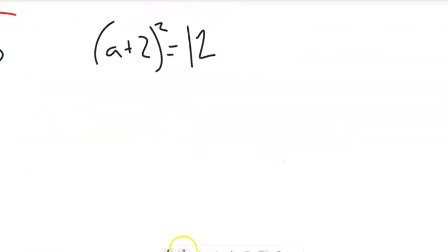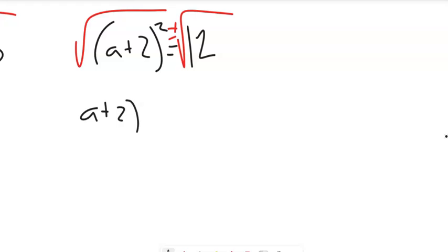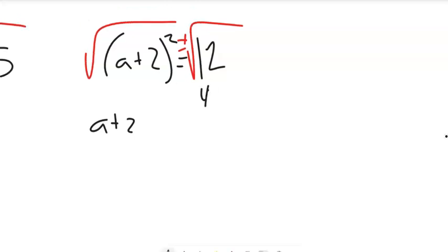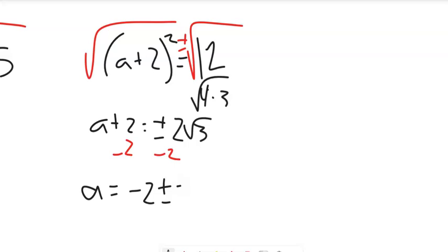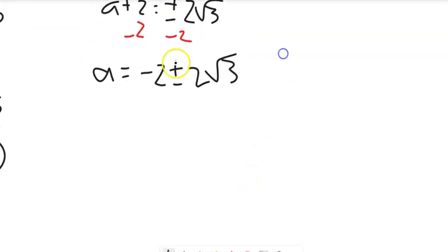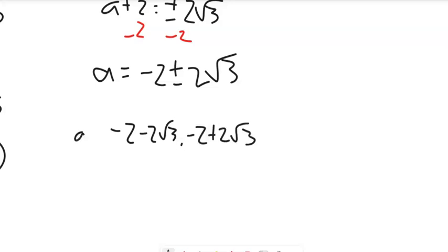Same sort of idea here. Let's square root both sides since we have that square — plus or minus comes with it. I've got a plus 2, not squared — I already undid the squaring. The right side: 12 is 4 times 3, so that's plus or minus 2 root 3. Still working to get a alone, so subtract 2 from both sides. I can't combine these because they're not like terms, so the answer is negative 2 plus or minus 2 root 3. That compact answer represents two solutions: negative 2 minus 2 root 3, and negative 2 plus 2 root 3.